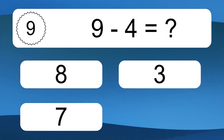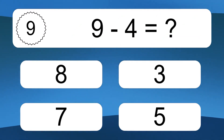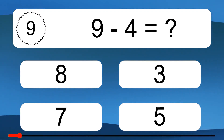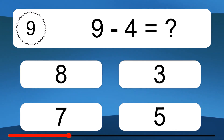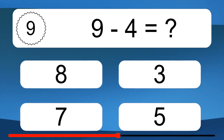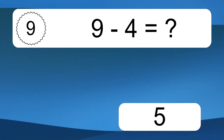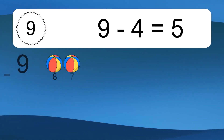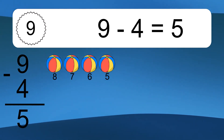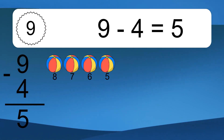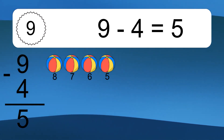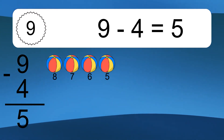9 minus 4 equals what? 9 minus 4 equals 5. Let's count it: 8, 7, 6, 5.